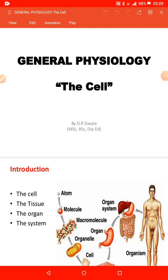To be very good Physiology students, we need to start with a cell, which we call General Physiology, because the human body is made up of cells — the functional unit of life. Understanding the basics about the cell makes it easy to learn not only Physiology, but also other courses like Biochemistry, Pathology, and Pharmacology, as they are all explained at a cellular level.